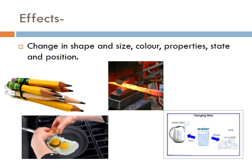We can identify a change by the effect it produces. The object or substance undergoing a change may show a change in its shape and size, color, properties, state, and position. Like the length of a pencil reduces with its usage. When we cook, the properties of the substance undergo a change. When an iron rod is heated, it turns red hot, showing a change in color. When ice melts, it changes into water, turning its state from solid to liquid.